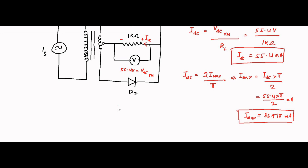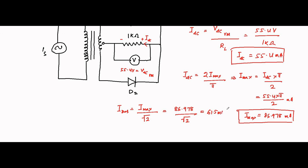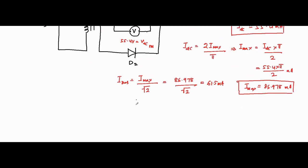Next is the RMS value. For full wave rectification, I_RMS equals I_max divided by root 2, which equals 86.978 divided by root 2 milliampere, coming to approximately 61.5 milliampere. So I_RMS equals 61.5 milliampere. We have now determined the DC, maximum, and RMS values of the current.